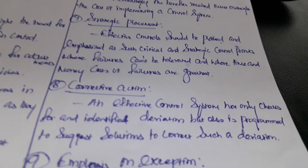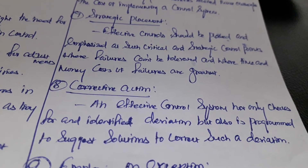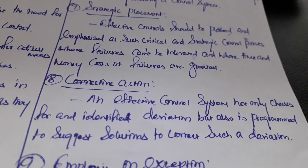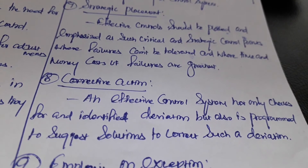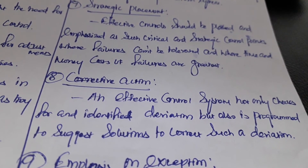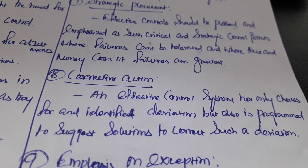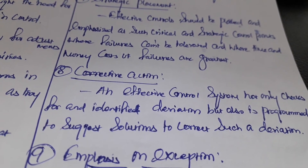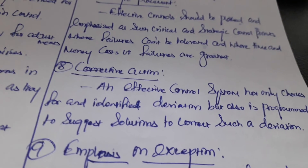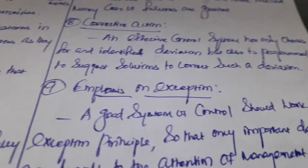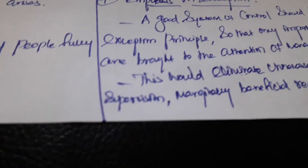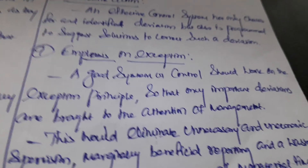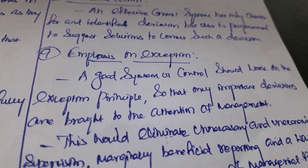Effective control in the system not only checks and identifies the deviation, but also is programmed to suggest solutions to correct such deviations. Effective control in the system should work on the exception principle, so that only the important deviations are brought to the attention of management.